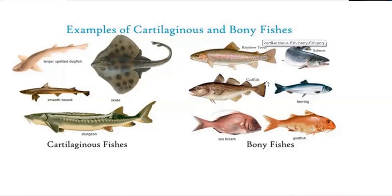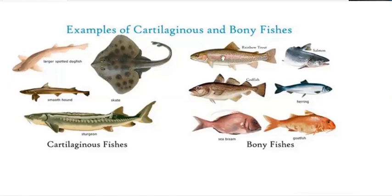Bony fish examples include herring, salmon, rainbow trout, sea bream, and goatfish. Steak fish and sturgeon are also caught fish. These represent the diversity of bony fish commonly consumed and found worldwide.